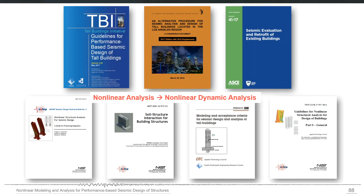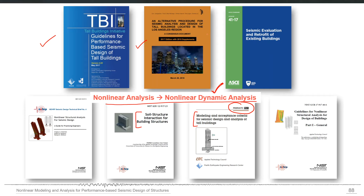In the new generation of performance-based seismic design, non-linear analysis and non-linear dynamic analysis are at the core of the methodology. The first generation used non-linear static analysis (pushover analysis), but now we have explicit non-linear dynamic analysis. ATC 72 is another important document covering modeling and acceptance criteria for seismic design and analysis of tall buildings. The primary documents are the TBI document, the consensus document for alternate procedure for seismic analysis and design for tall buildings in the Los Angeles region, and ASC 41, which provides both capacity and acceptance criteria.